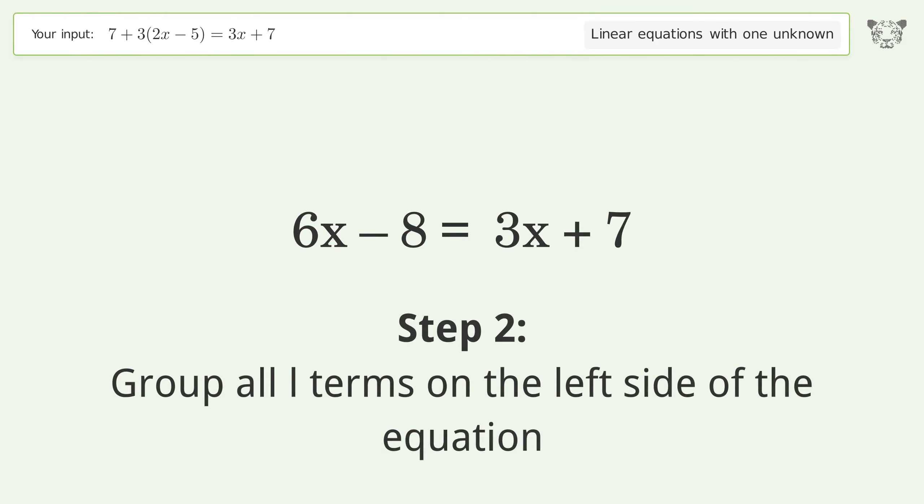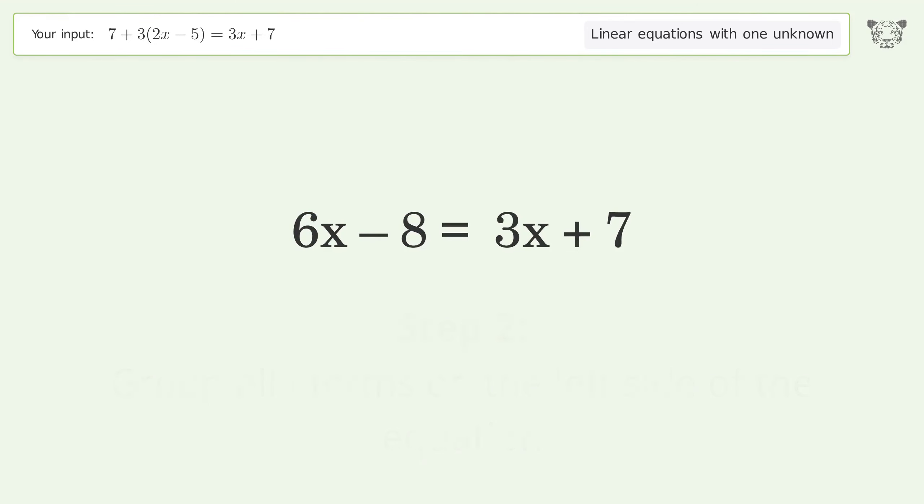Group all variable terms on the left side of the equation. Subtract 3x from both sides. Group like terms and simplify the arithmetic.